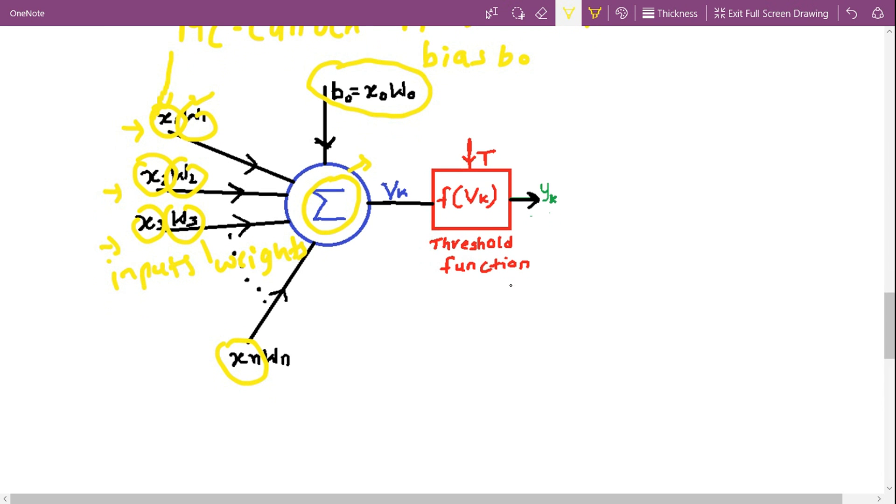So the output vk from neuron is given by, or so far from the summation function is given by, vk equal to x0·w0 plus x1·w1 plus x2·w2 so on plus xn·wn, which can also be written as summation function j equal to 0 to n, xj·wj.